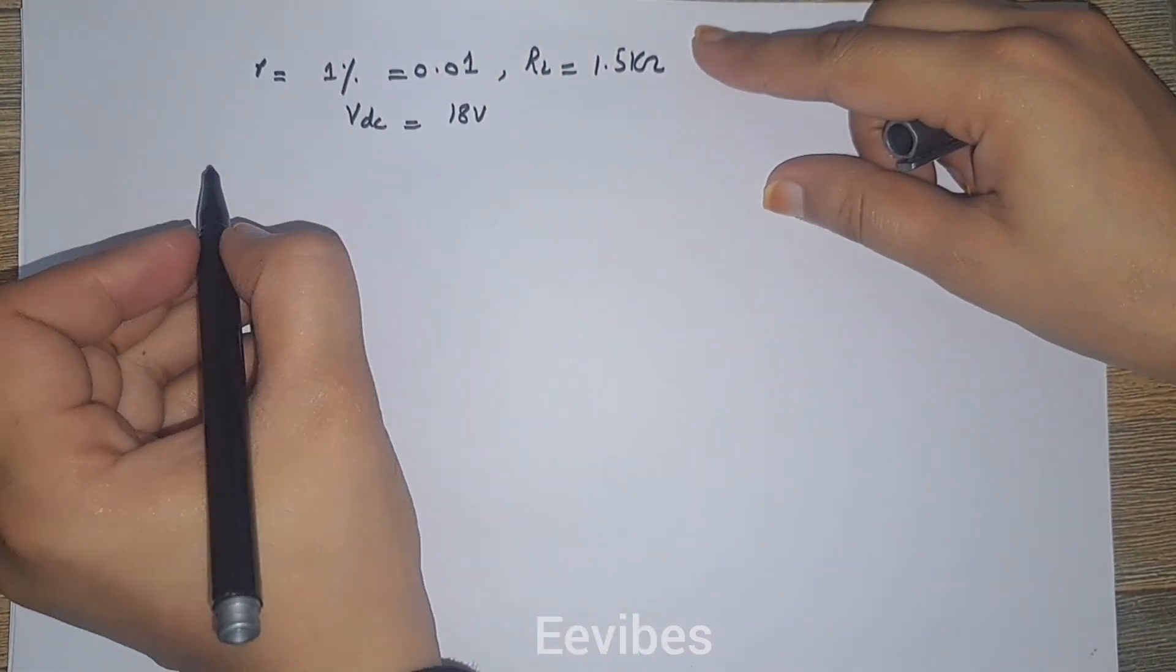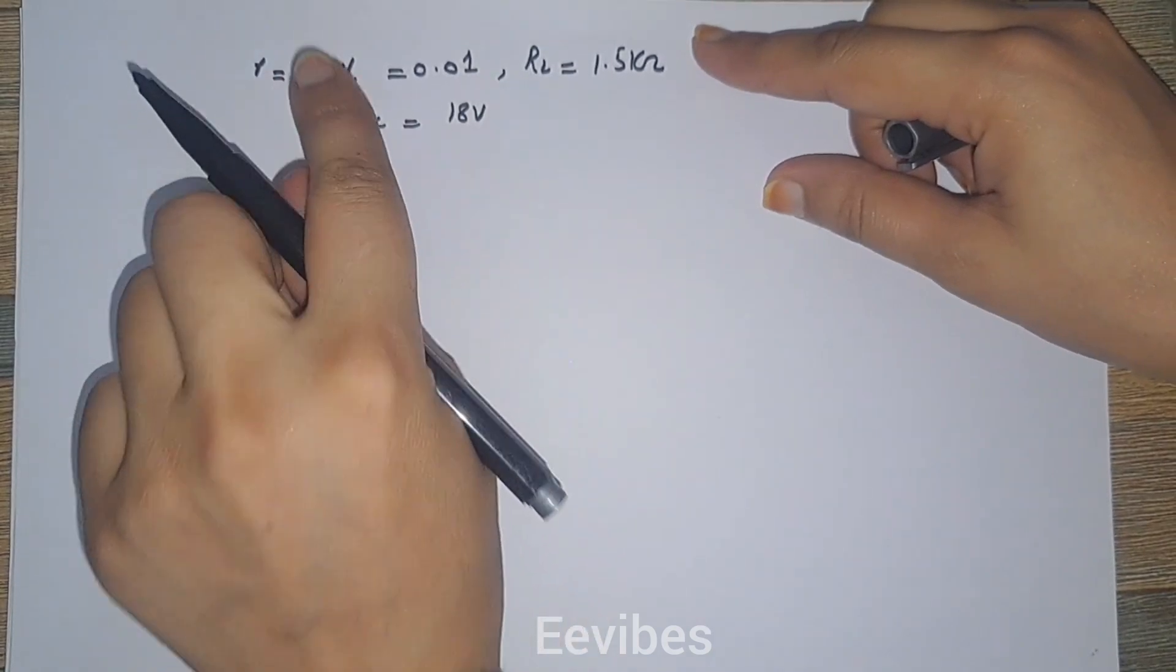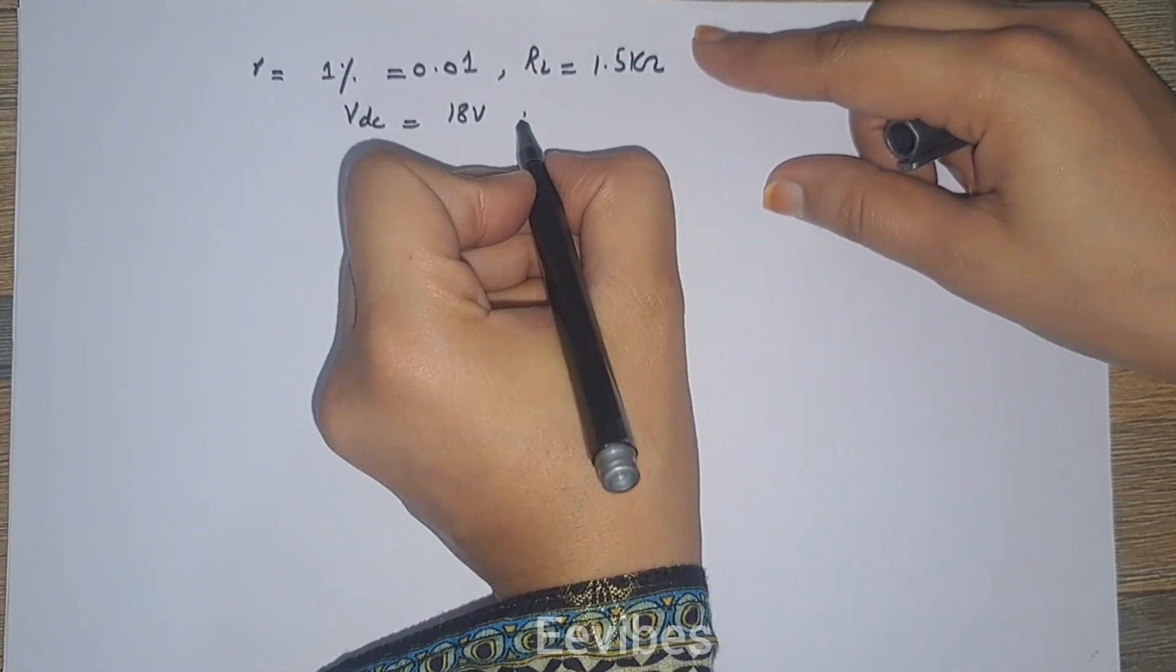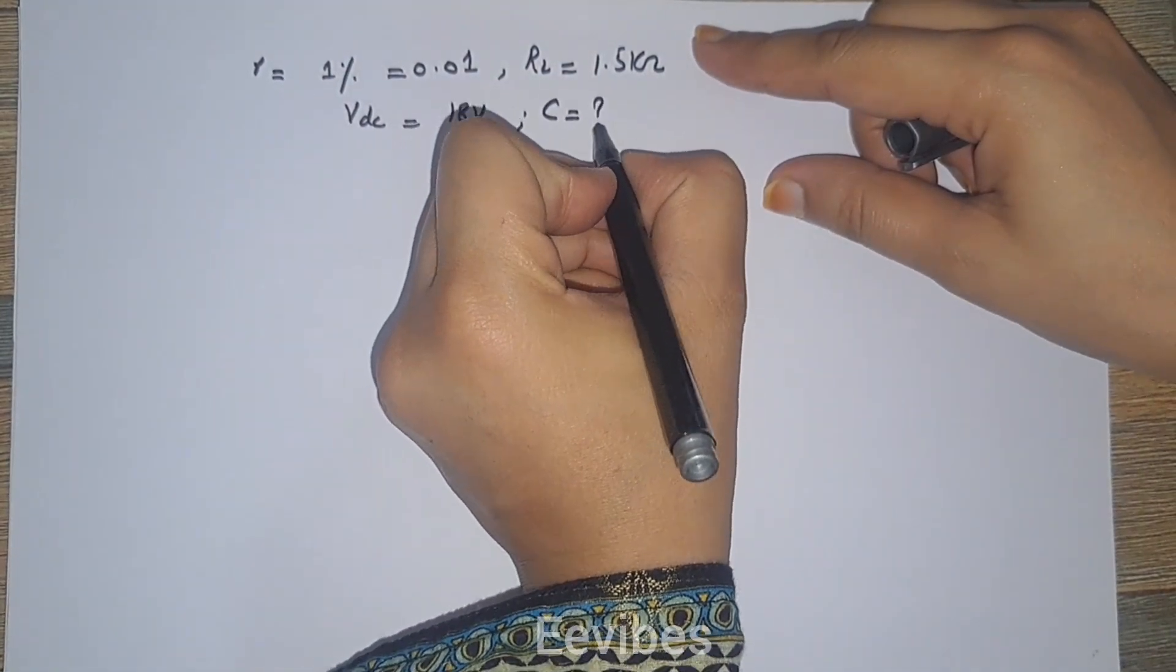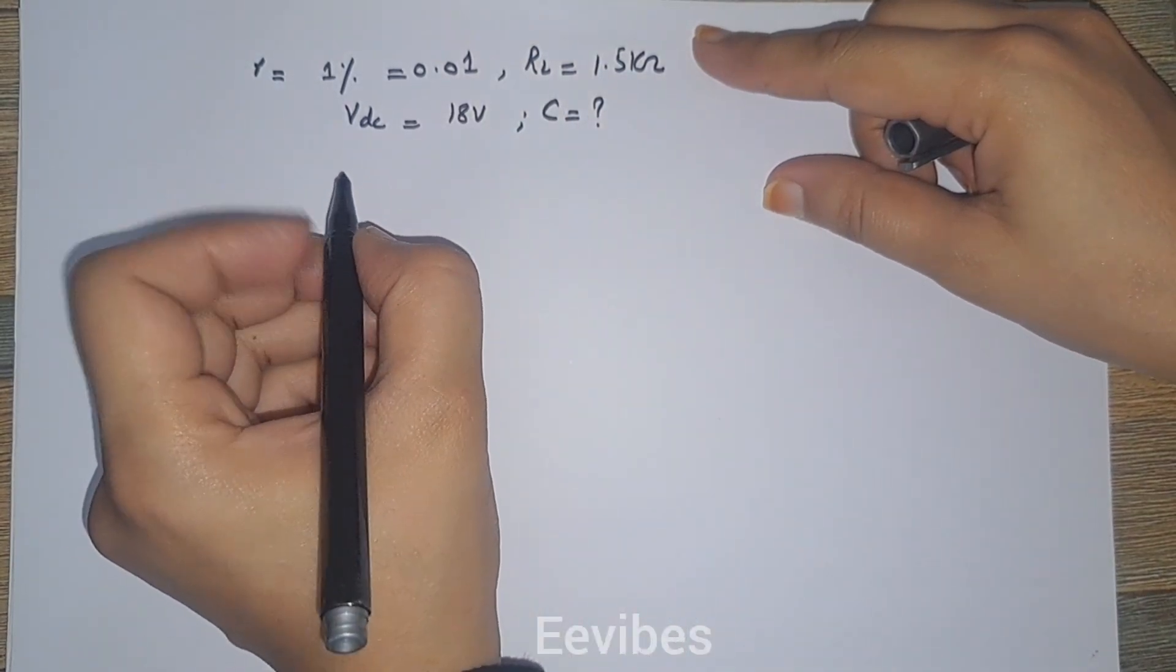So these are the requirements that have been given to you for producing the ripple factor of 1%, and we have to determine the value of the filter capacitor that is required for this purpose.